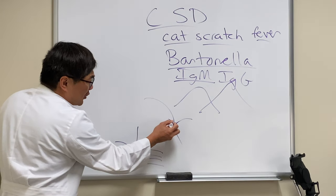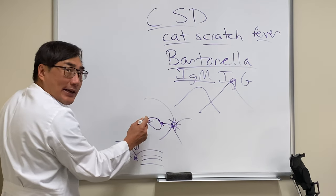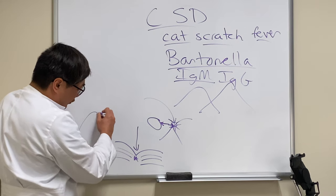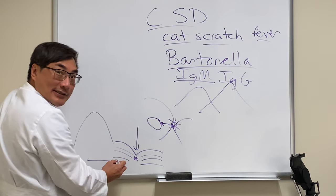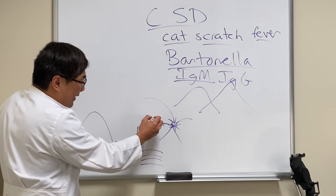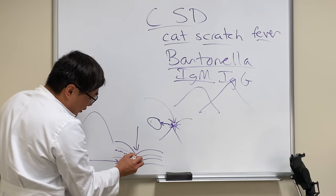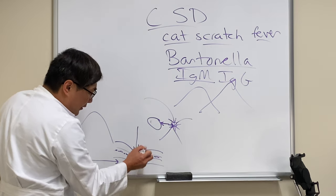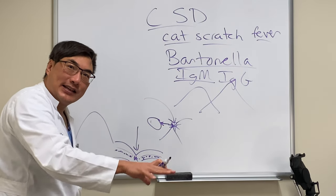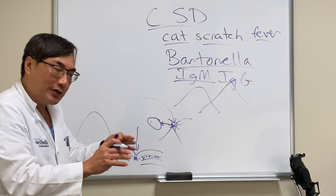When you have a swollen disc in cat scratch neuroretinitis, the fluid goes right underneath the macula and tracks along into the peripapillary region, then settles into the macula. When the exudate forms after the bathtub drains, there's a ring around the tub — that ring is the exudate left behind from the subretinal and intraretinal fluid.